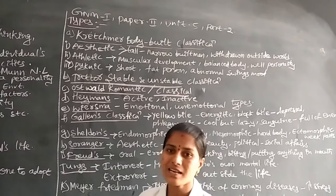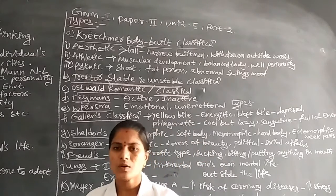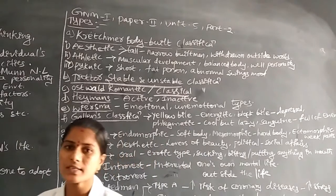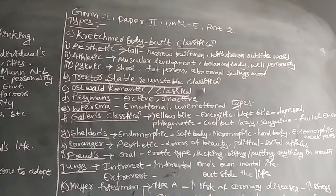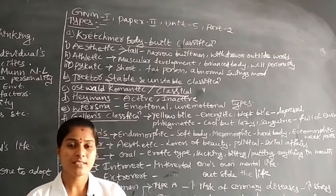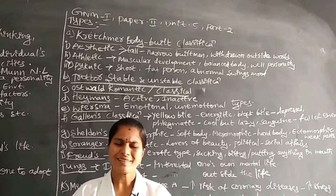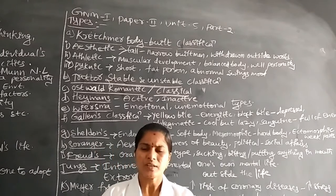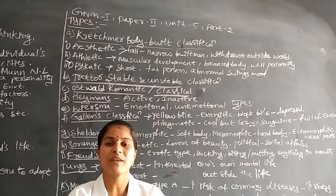Next is Jung's classification. In this, there are introvert and extrovert personalities. In introvert personality, persons have good interest in their own life — 'This is my habit, this is what I do habitually.' They have good interest in their self-experience and self-life.